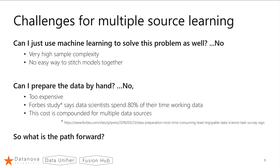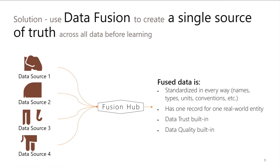So what is the path forward? Data fusion. Data fusion is essentially pulling together the different data sources, standardizing each so it has the same attribute names, the same data types, the same type system, the same units, and the same conventions. This part is hard enough, but that's a problem we have already solved. That is what is traditionally understood as data unification or data integration. Data fusion is one step beyond that.